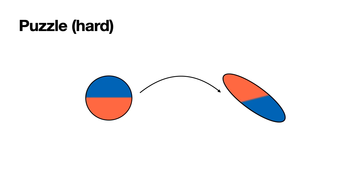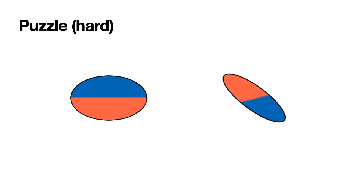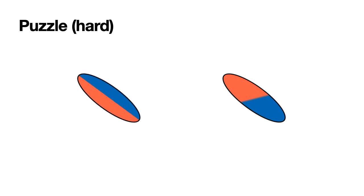Now let's go for a harder puzzle. In this one, the circle is colored, and you're supposed to turn it into the ellipse on the right but respecting the colors. If we try the same thing as before — stretch horizontally, compress vertically, then rotate — we get the shape right, but not the coloring. This problem is harder because we actually have to map every point of the circle to a point in the ellipse. You can think of it as a colored circle or a chain with colored beads that need to be in the right location when you finish.